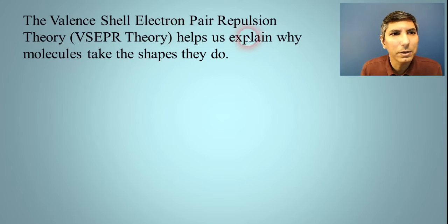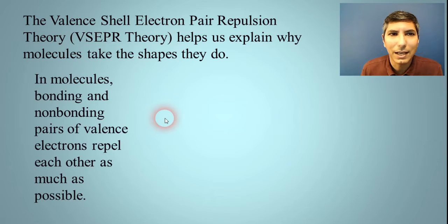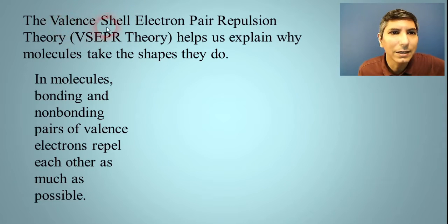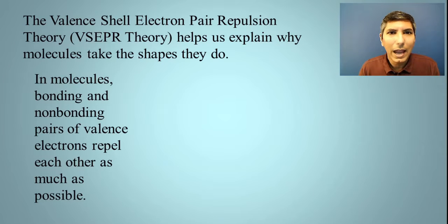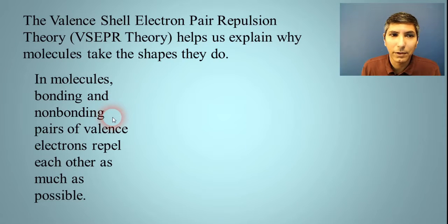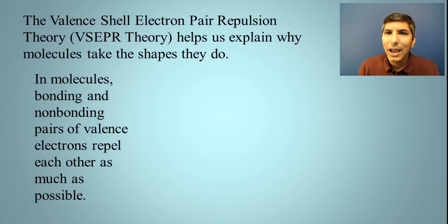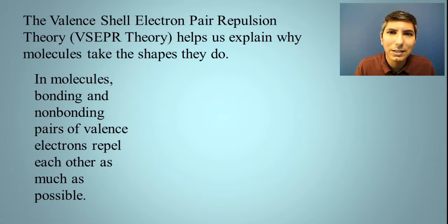When we say valence shell electron pair repulsion theory, that means exactly what it says. The only electrons participating in the bonding and structures of these molecules are the valence shell electrons — we don't worry about the core electrons here. They are always going to be paired up, as we see in Lewis diagrams. Both the bonding and non-bonding pairs of electrons are going to repel each other, trying to get as far away from each other as possible. That idea of electron repulsion governs the shapes that molecules take.